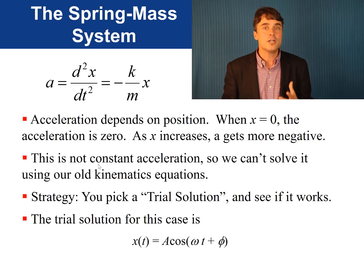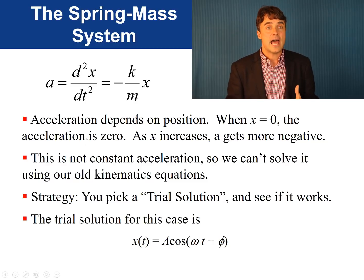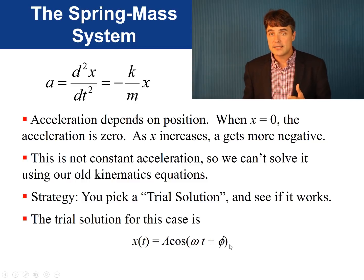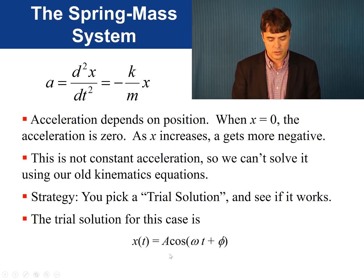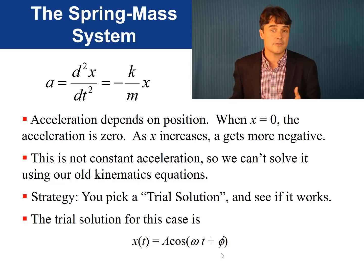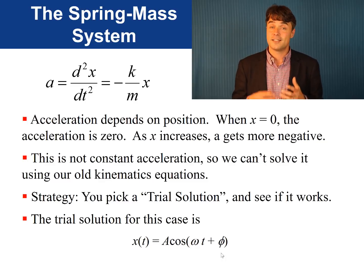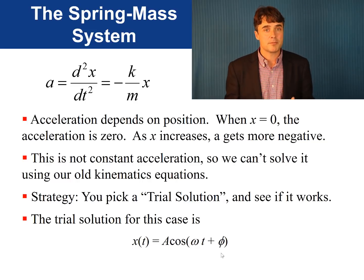The trial solution for this case is x equals A times the cosine of omega times t plus phi. x is a function of t here, and there are three constants in this equation: A, omega, and phi. Although we have chosen to use cosine instead of sine, this is still called a sinusoidal oscillation, and it's also called simple harmonic motion.